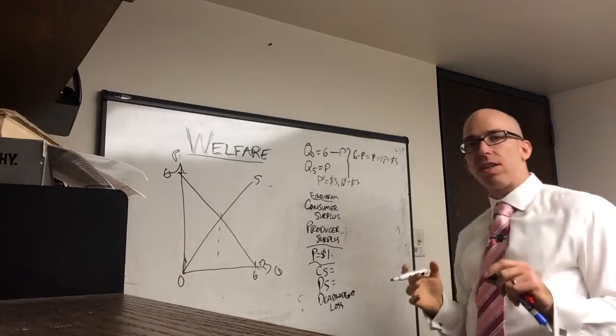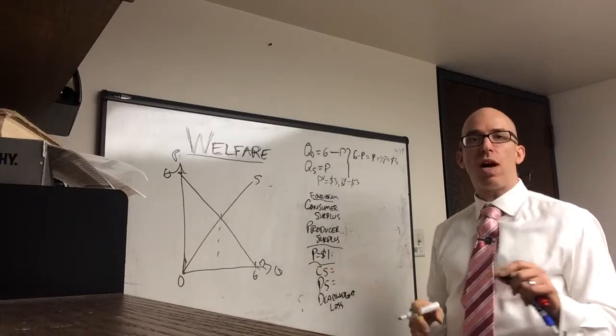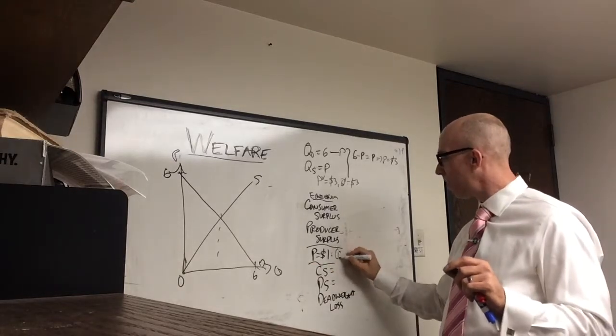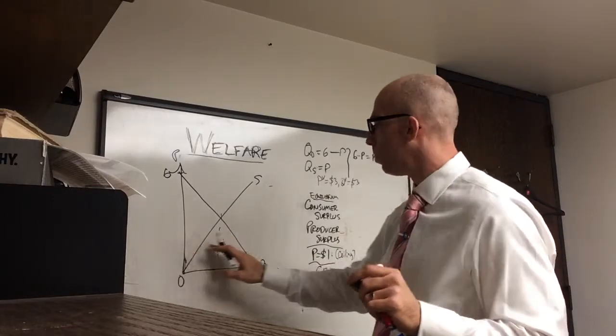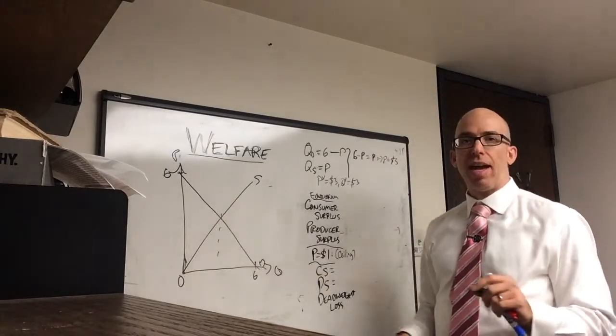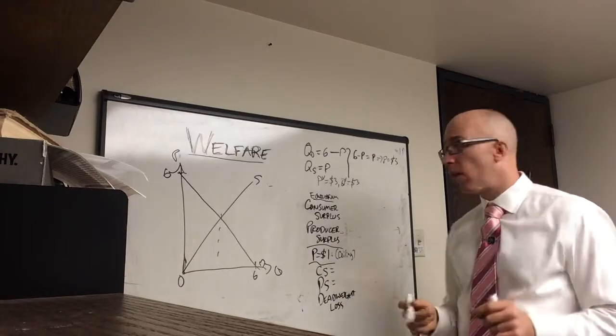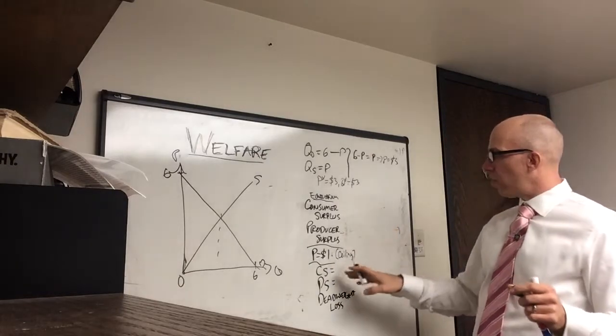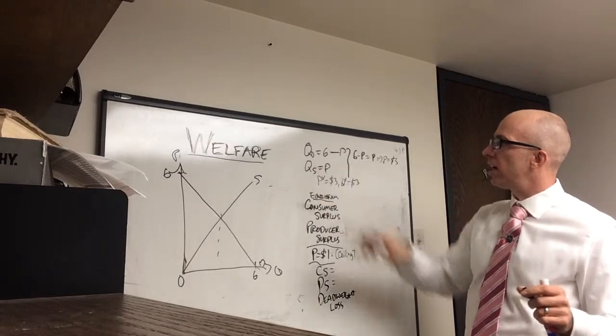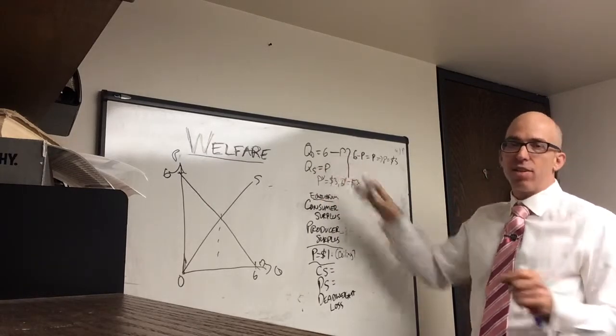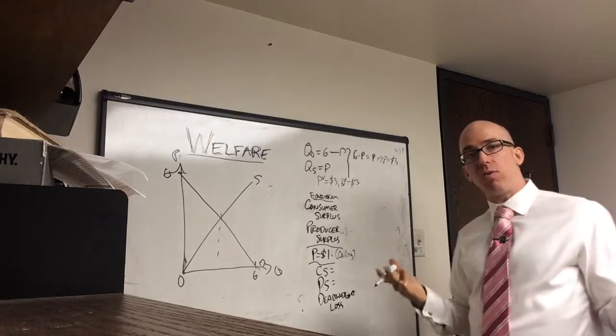Now what we're also going to do is introduce a price of 1, which is a price ceiling. And with that, we can figure out what would happen if a price of 1 were to affect supply and demand and how big the shortage would be. So if price is 1, quantity supplied must be 1. Quantity demanded would be 5. And the shortage would be 5 minus 1 or 4.